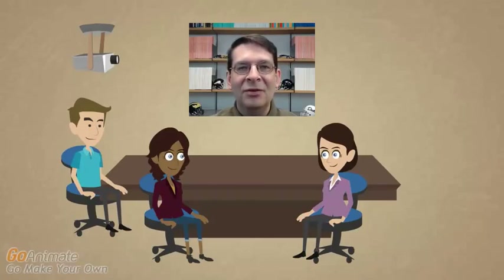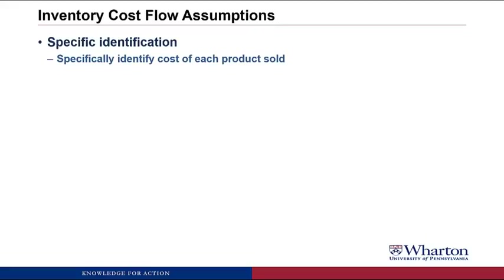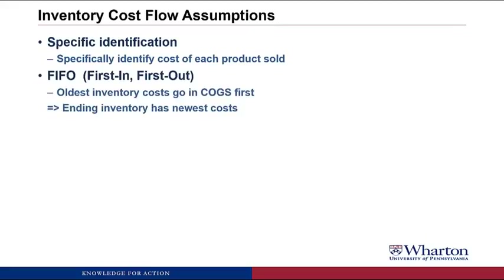That is, unless you use LIFO, which we'll talk about in a little bit. Another method — probably one of the most common — is FIFO, or First In, First Out. That means the oldest inventory costs go into Cost of Goods Sold first, and so ending inventory represents the newest cost of the inventory we acquired.